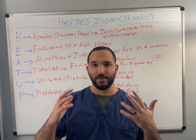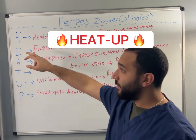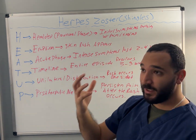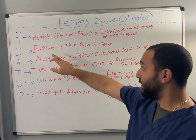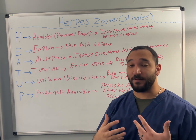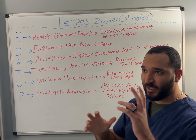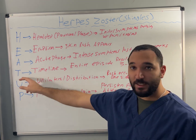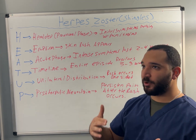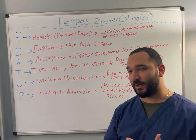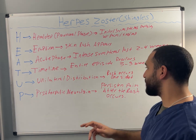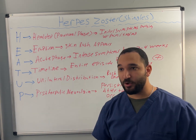A helpful mnemonic is HEAT UP. H is for the heralded prodromal phase — the initial phase where symptoms begin with pain. E is for eruption — when the skin rash appears. A is for the acute phase, where the patient experiences intense symptoms lasting normally two to four weeks. T is for the timeline — this can last from three to five weeks or more. U is for unilateral — shingles travels unilaterally across the body following a nerve pathway and the rash occurs one-sided. P is for post-herpetic neuralgia — persistent pain after the rash has occurred and crusted over.